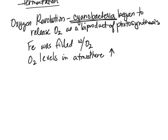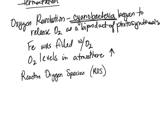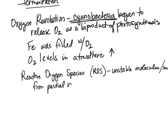So why was oxygen causing this problem and killing off organisms? That is because of what are called reactive oxygen species, or ROS. ROS are unstable molecules or ions that result from the partial reduction of oxygen.